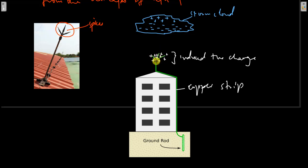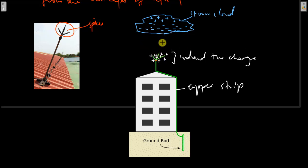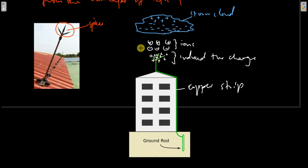Because of the very high electric field intensity at the sharp points, the air molecules in the air surrounding this lightning conductor will get ionized. So we'll have ions in the space here — negative ions and positive ions — ionized due to the high electric field intensity. As in the previous explanation of corona discharge, the negative ions will be attracted to the sharp spikes, and the positive ions will be repelled to the cloud to neutralize it.